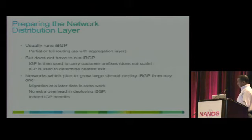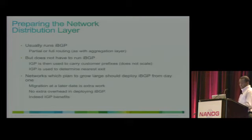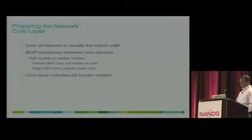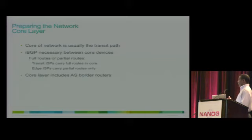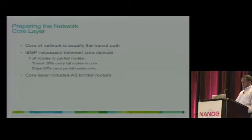The aggregation layer doesn't have to run IBGP, and in most cases it doesn't carry the full internet table. But the core has to participate in full BGP, should run IBGP, should carry the full internet table — and the core includes the AS border routers.